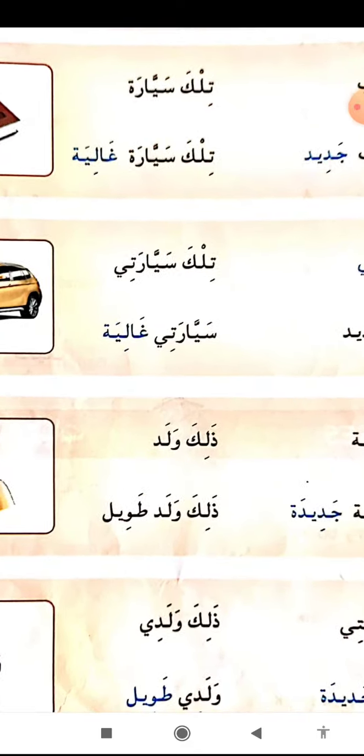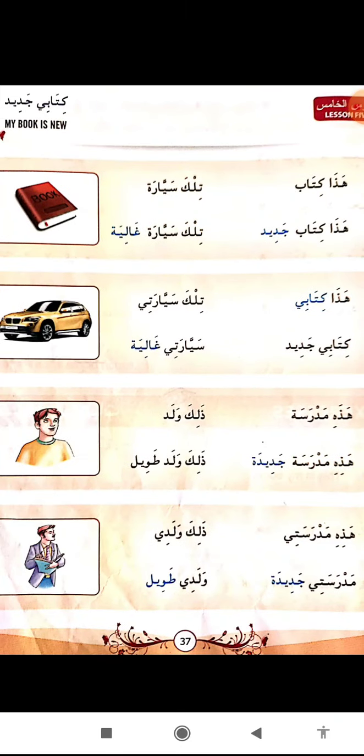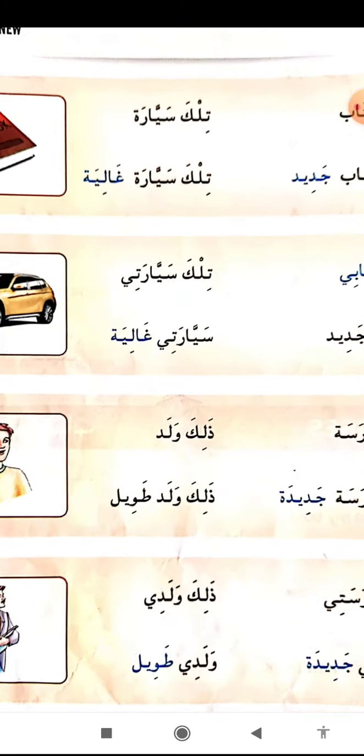Zamire Mutasila. In this lesson, some of the Zamire Mutasila and Asmaul Ishara. Asmaul Ishara means demonstrative pronouns. We will discuss about it after this. First, we do a translation.